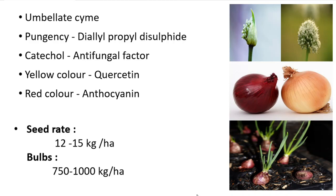The pungency in onion is due to dipropyl disulfide, and the antifungal factor present in onion is catechol. The yellow color observed in the outer skin of the onion is due to quercetin, and the red color is due to anthocyanin pigment.